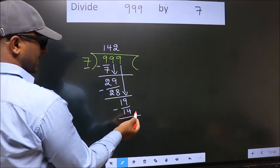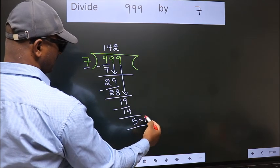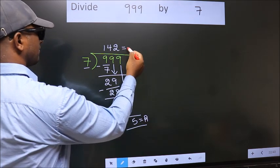No more numbers to bring it down. So, we stop here. This is our remainder. This is our quotient.